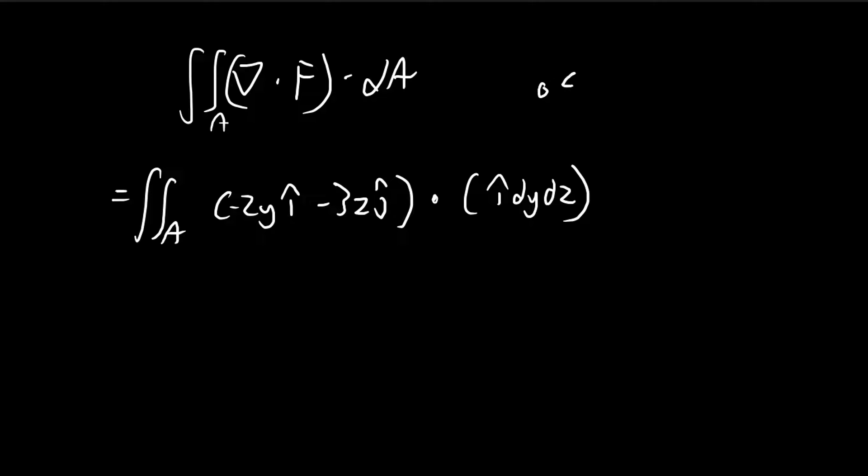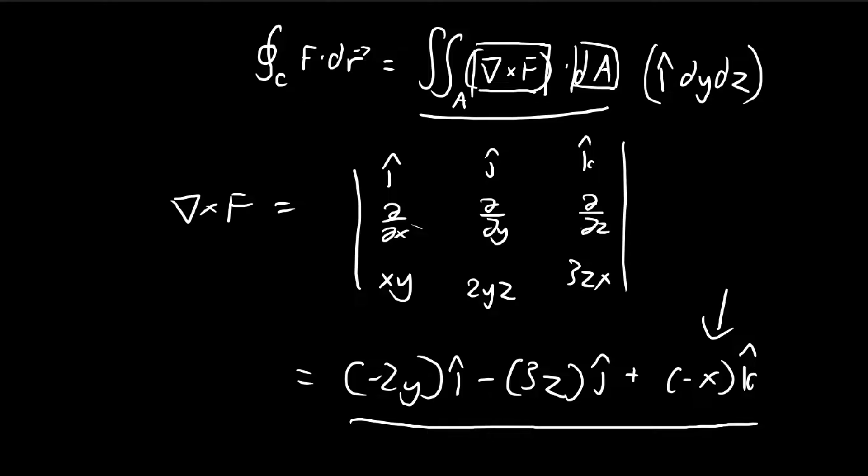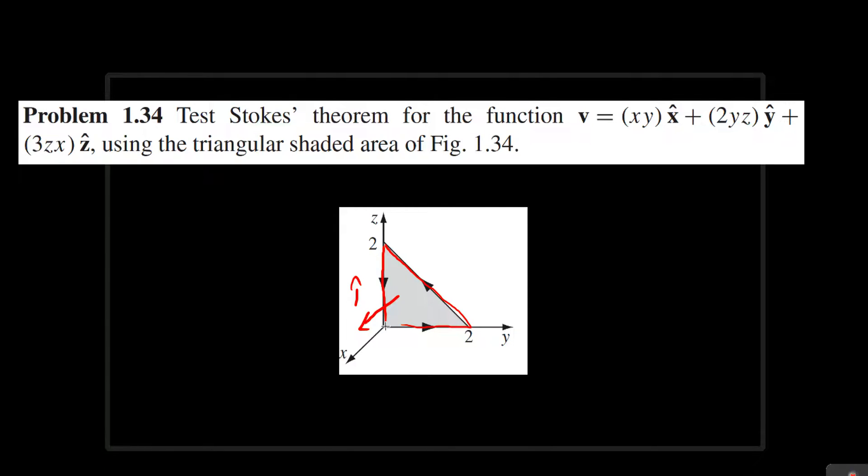In our case, y is going to vary from 0 to 2, and z is going to vary from 0 to 2 minus y. So this is the bounds of the surface. We're integrating across the surface A, and this surface is going to be bound by 0 to 2 for y, and 0 to 2 minus y for z.